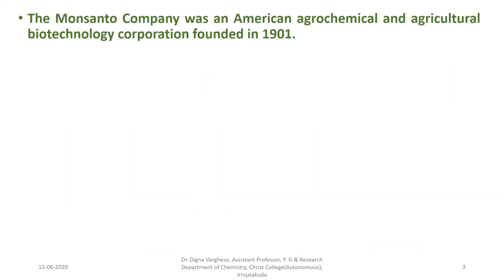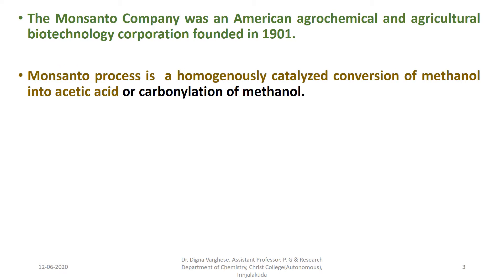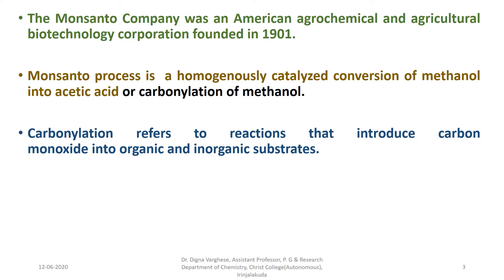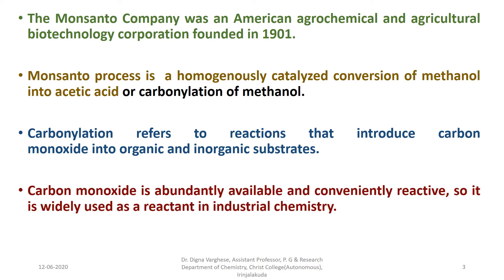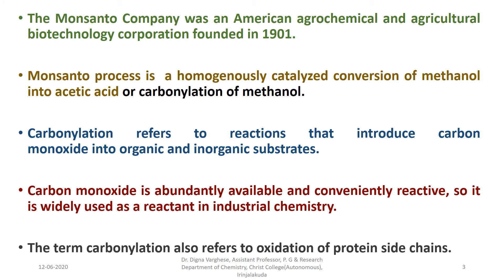The Monsanto company was an American agrochemical and agricultural biotechnology corporation founded in 1901. The Monsanto process is a homogeneously catalyzed conversion of methanol into acetic acid, or carbonylation of methanol. Carbonylation refers to reactions that introduce carbon monoxide into organic and inorganic substrates. Carbon monoxide is abundantly available and conveniently reactive, so it is widely used as a reactant in industrial chemistry. The term carbonylation also refers to oxidation of protein side chains.